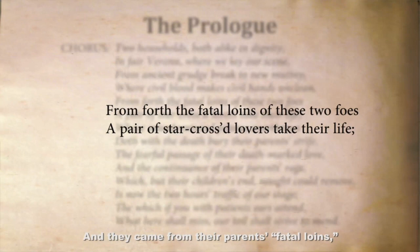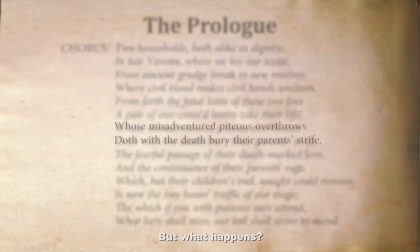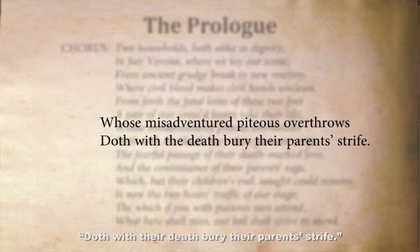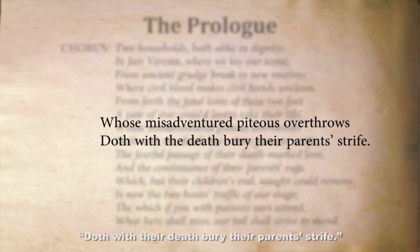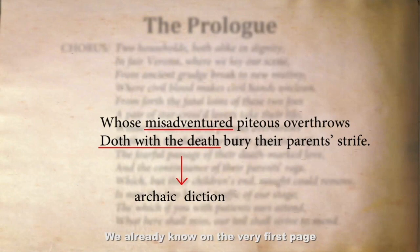They come from their parents' 'fatal loins' — loins means they gave birth to them, they're the parents. In line eight it says 'doth with their death bury their parents' strife.' Doth with their death means they're going to die. We already know on the very first page that Romeo and Juliet are not going to make it. That's a spoiler.